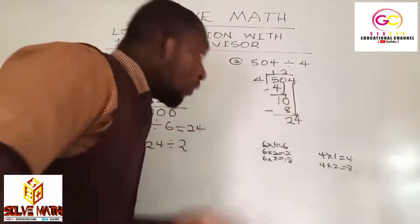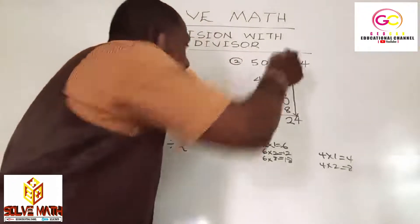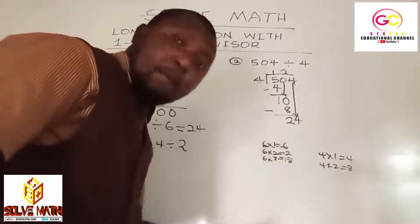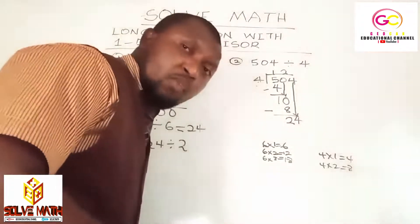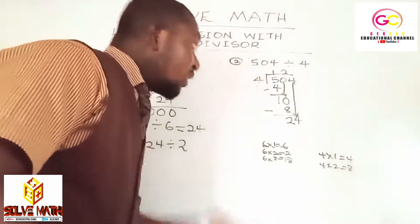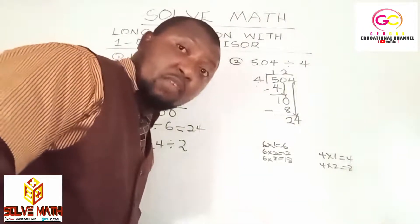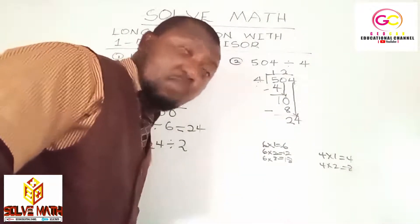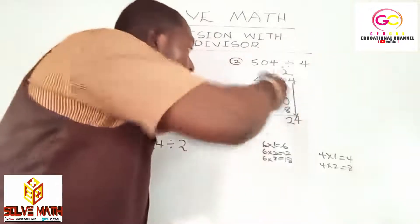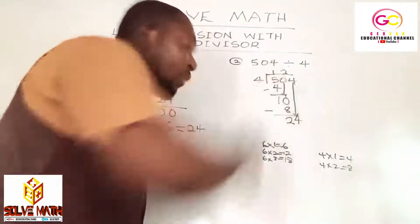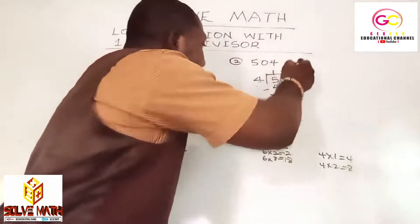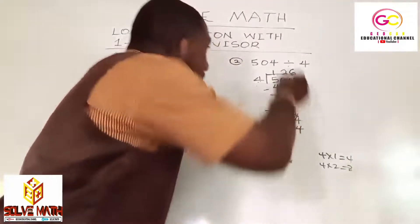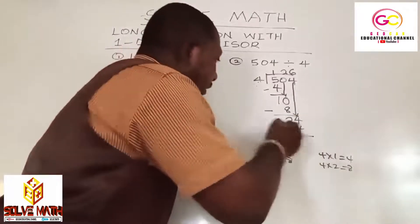4 will go into 24 how many times? What I mean is 4 times what number will give you 24? 4 times 1 is 4, 4 times 2 is 8, 4 times 3 is 12, 4 times 4 is 16, 4 times 5 is 20, 4 times 6 is 24. So 4 will fill 24 six times. I believe you saw where I wrote my 6. Nicely written.